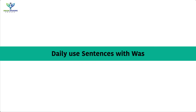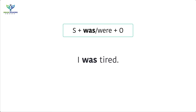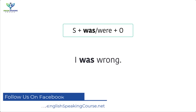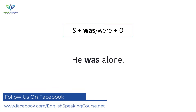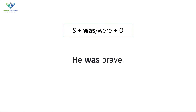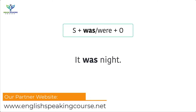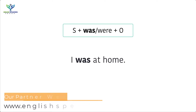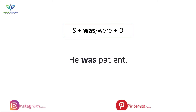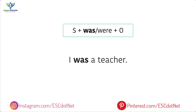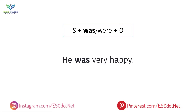Daily use sentences with 'was': I was tired. I was wrong. He was alone. He was brave. It was night. I was at home. He was patient. I was a teacher. He was very happy.